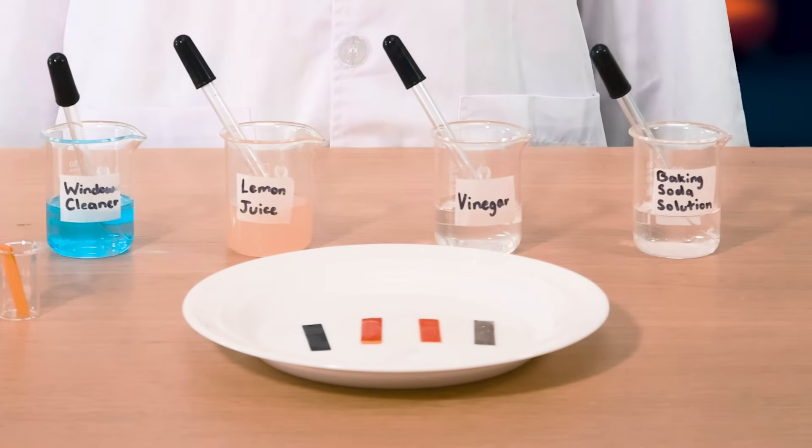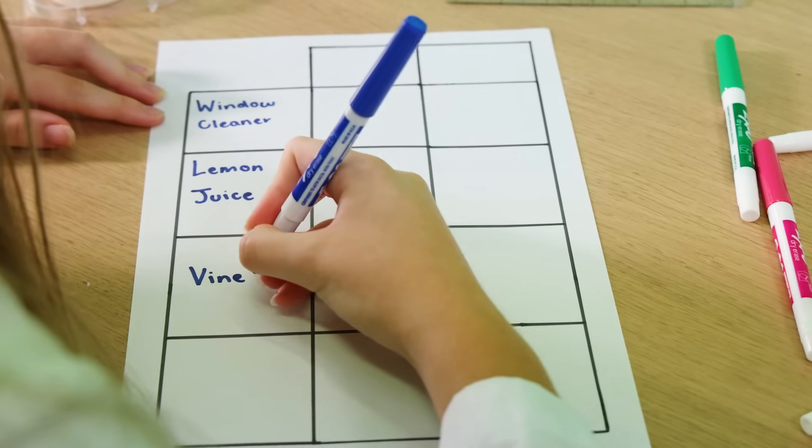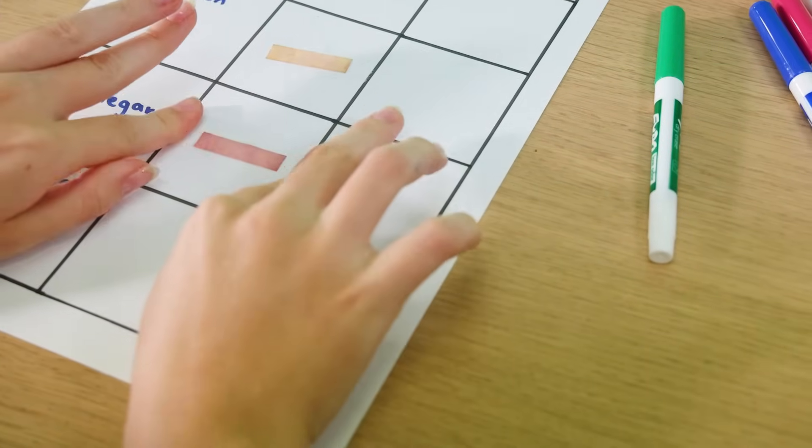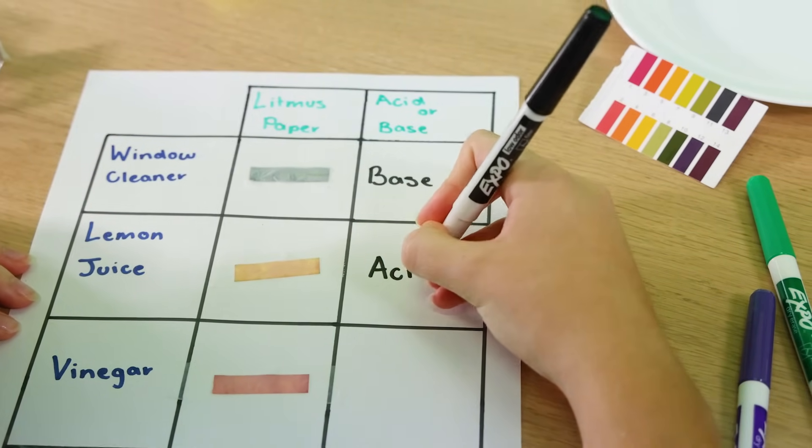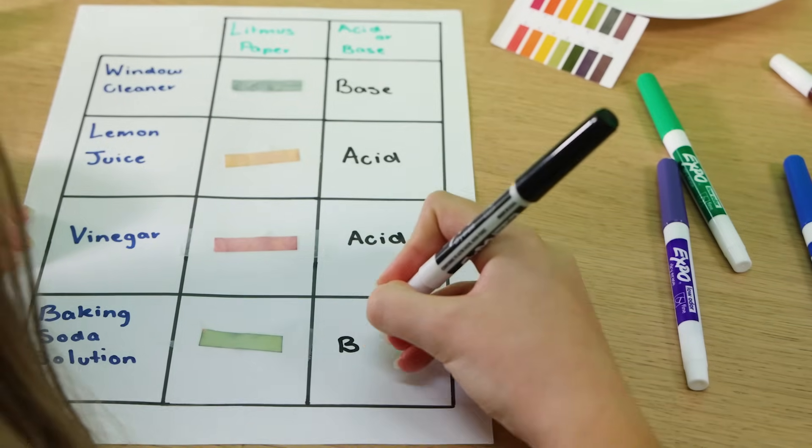Now that we have our results, let's record them on our pH chart. We'll paste the labels for each substance and write acid next to lemon juice and vinegar, and base next to window cleaner and baking soda.